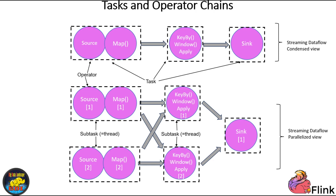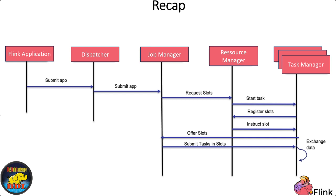Let's recap. Flink consists of a Job Manager and multiple Task Managers. Each Task Manager is a JVM process that may execute one or more subtasks. Task slots control how many tasks a Task Manager accepts and represent a fixed subset of resources. Slot sharing allows subtasks from the same job to share slots, optimizing resource utilization.